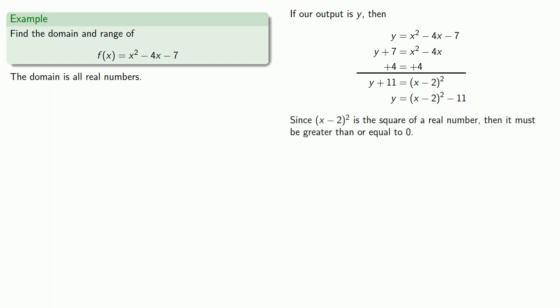So now let's think about this. Since x minus 2 squared is the square of a real number, then it must be greater than or equal to 0. Another way of looking at this is the smallest that x minus 2 squared can be is 0. So whatever y is, it's at least 0 minus 11. And so that tells us that y has to be greater than or equal to minus 11. And so our range is f(x) greater than or equal to negative 11.